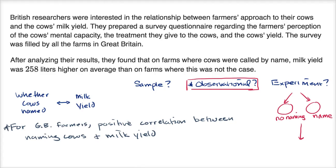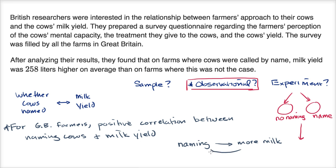Some people might be tempted to draw causality. You see this all the time with observational studies — people try to hint that maybe there's a causal relationship. Maybe the naming is actually what makes the milk yield go up. Or maybe it's the other way: the cows produce a lot of milk, the farmers like them more and want to name them — 'that's my high milk-producing cow.' There's a lot of temptation to say naming causes more milk, or that more milk causes naming. But you can't make a causal relationship based on an observational study. You might have been able to do it with a well-constructed experiment, but not with an observational study.